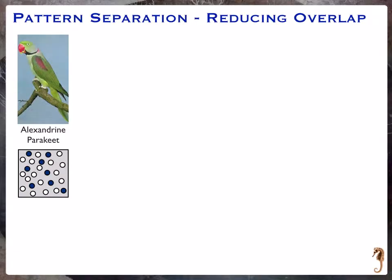So first off, really what is pattern separation? Pattern separation talks about transforming similar overlapping representations of information into more dissimilar patterns of representation. Take this picture of this Alexandrian parakeet. If I were to stick some electrodes into your brain I would find that there are some neurons that are firing right now as you're looking at this picture and others that aren't. We could color code the firing ones in blue and the ones that aren't firing white, and we can see that there's some pattern of activity — some representation for this bird.